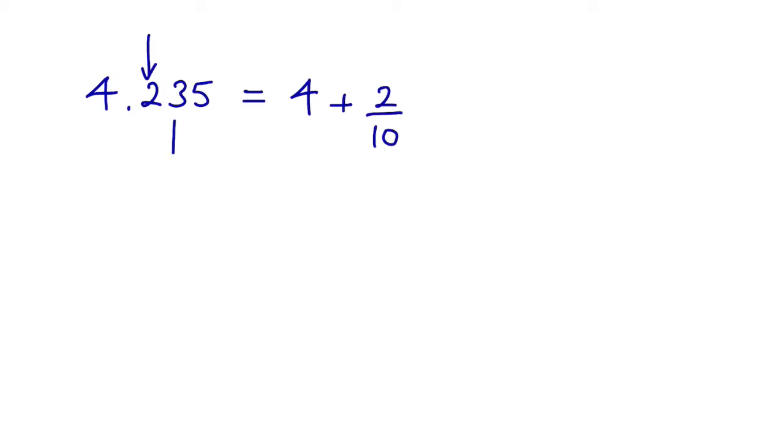The next digit here is in the hundredths column, so we have 3 hundredths. And the last digit here, this 5, is in the thousandths column, so that's 5 over 1000.